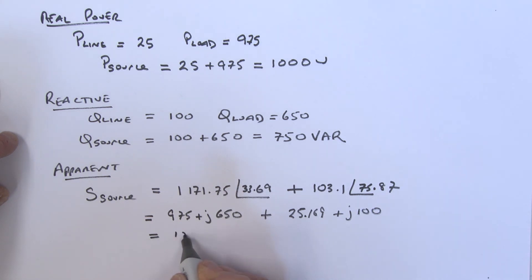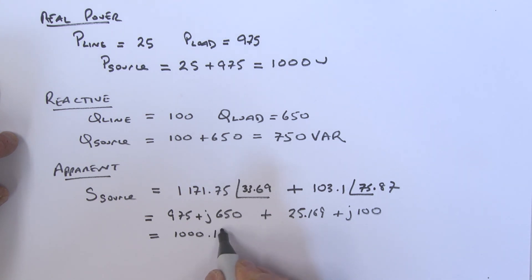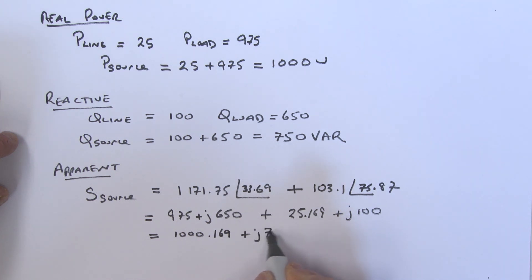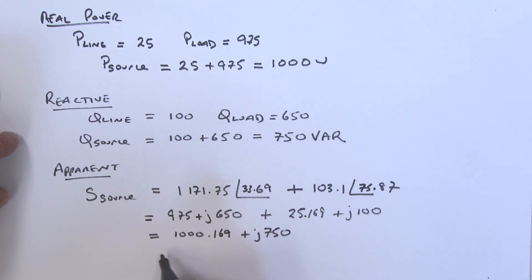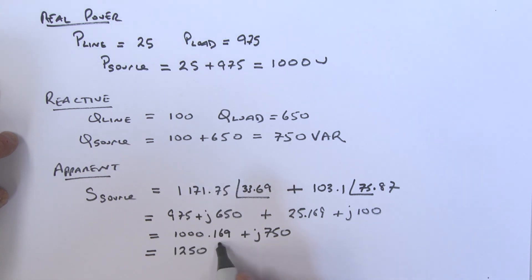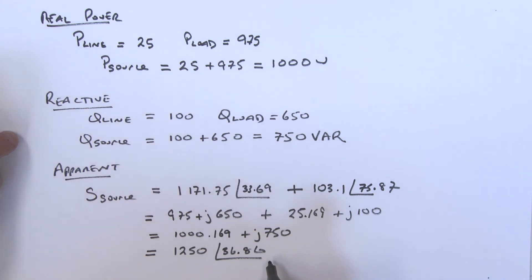There is some rounding error introduced here. Converting 1000.169 + j750 to polar form gives approximately 1250 at an angle of 36.86 degrees, which matches what we calculated for the source apparent power on the previous page — confirming our results.